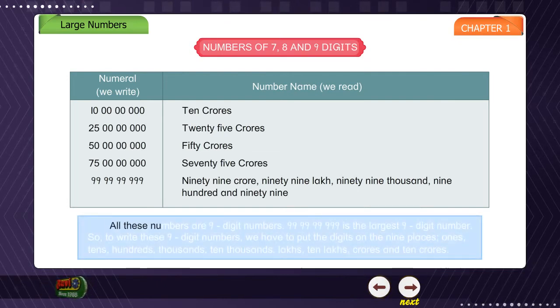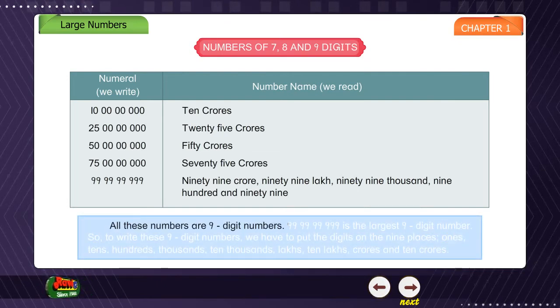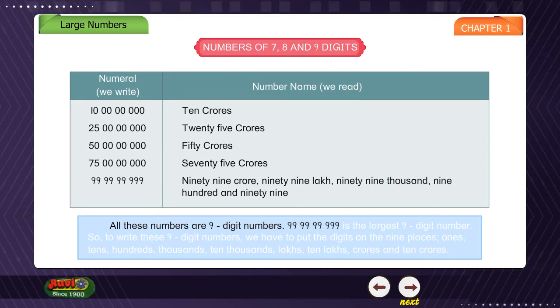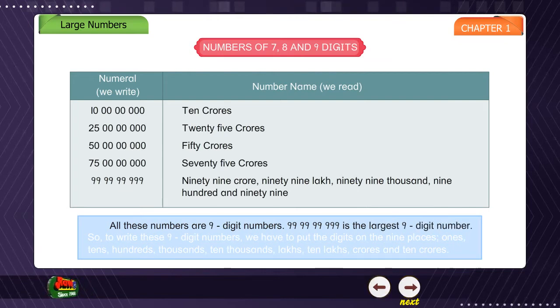All these numbers are 9 digit numbers. 99 crores, 99 lakhs, 99 thousand, 9 hundred and ninety-nine is the largest 9 digit number.